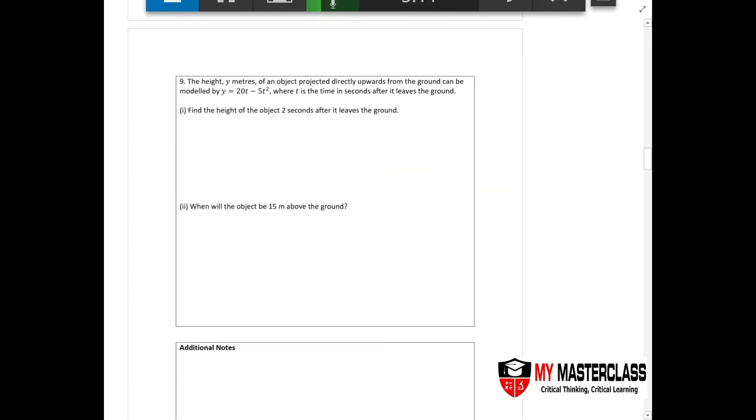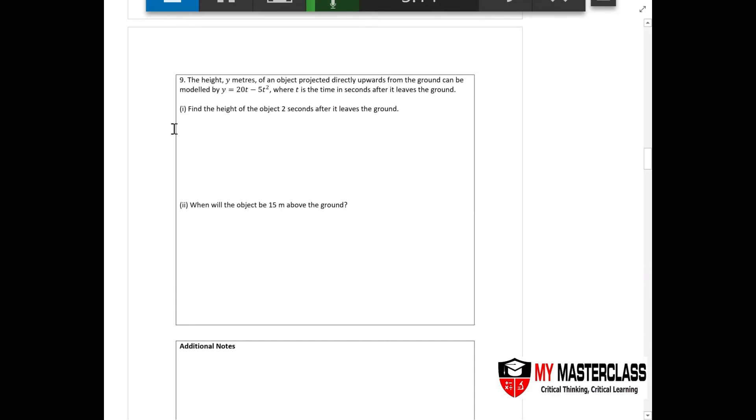Now then moving downwards. Question 9 - they tell you that the height y meters of an object projected upwards from the ground can be modeled. Remember, read the question. This kind of question you really have to read. They are projected upwards. So what's the height of the object two seconds after it leaves the ground? This ball was initially hitting upwards. The height of the object two seconds means t equals 2, so y equals 22 minus 2 square. You'll get y equals to 20 meters over here.